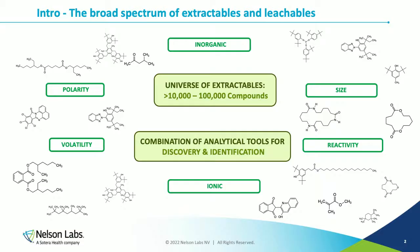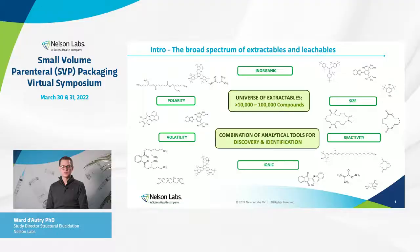The universe of extractables is estimated between 10,000 and 100,000 different chemical structures. They can differ in size, they can be reactive or not, charged or not, organic or inorganic. The complete polarity range is possible — from apolar to very polar — and compounds can be volatile or non-volatile. Because of this wide variety, you need a combination of different analytical techniques for the discovery and identification of extractables and leachables.